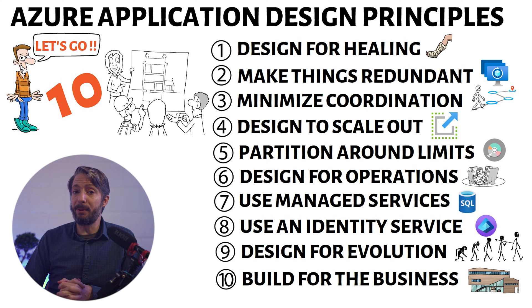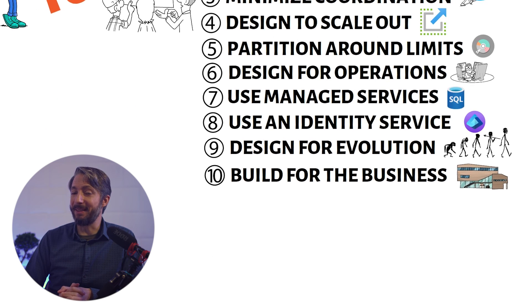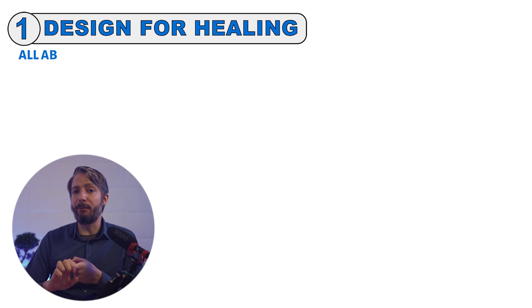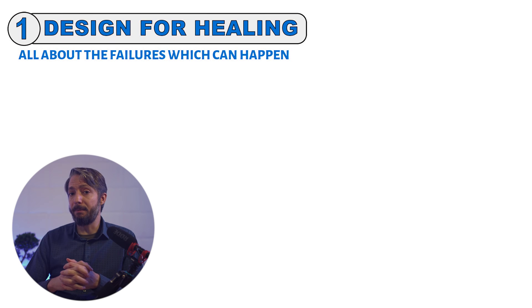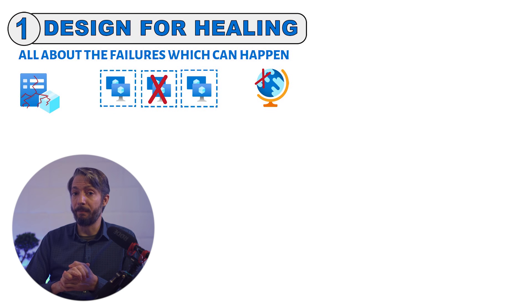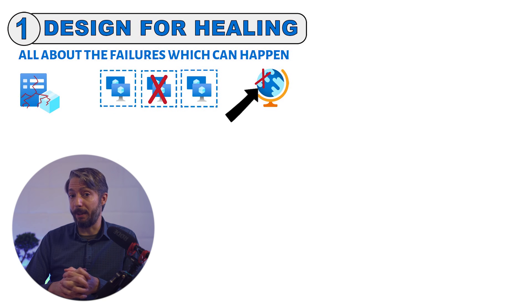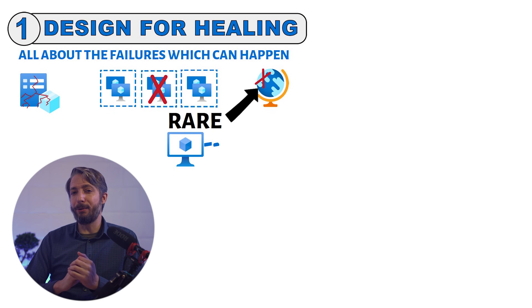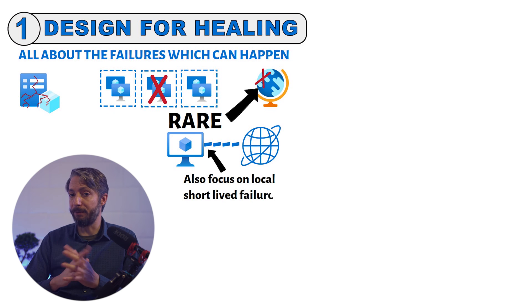Let us now dive into each one of them to see how we can handle them in Azure. The first one, design for healing, is all about failures that can happen. Failures can be, for example, in the underlying Azure hardware — they can fail an availability zone, or a whole Azure region may experience a disruption. Major outages, such as entire regional outages, are very rare, but they can definitely occur. However, a focus should also be on local short-lived failures, such as when network connectivity temporarily fails.